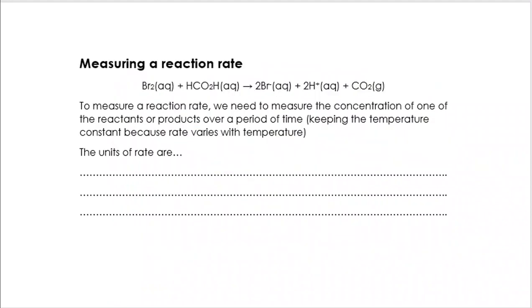So now let's move on and let's look at how we might measure a reaction rate. We've got an equation here. We can see Br2 reacting with HCOOH. That's methanoic acid. We're making bromide ions, hydrogen ions and carbon dioxide.